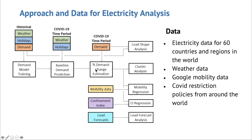Once we had the percent demand change, we correlated it with many different things. The first was the confinement index — all the different confinement policies around the world, which some groups have done the painstaking work of codifying into categories based on intensity. We collected data for 60 countries and regions in the world, which took about a month. We went through different websites, contacted people, and we now have a database of hourly electricity consumption from 2015 to today for all these places, along with corresponding weather data.